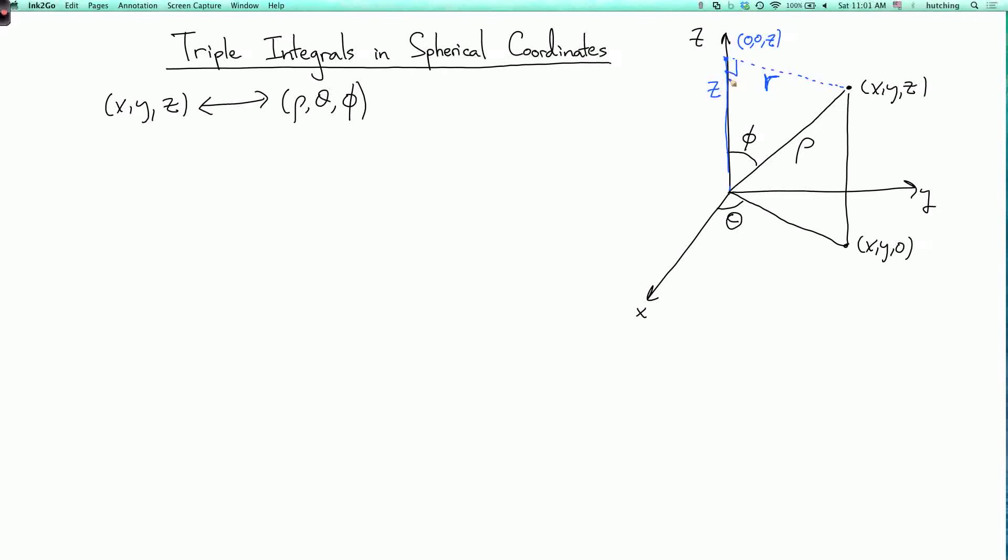And this is a right triangle. So from this right triangle, we see that z equals rho cosine phi. And also we see that r equals rho sine phi. And r is the same as this length of this line segment down here. And then we know that x equals r cosine theta and y equals r sine theta. So that tells us that x equals rho sine phi cosine theta. And y equals rho sine phi sine theta.